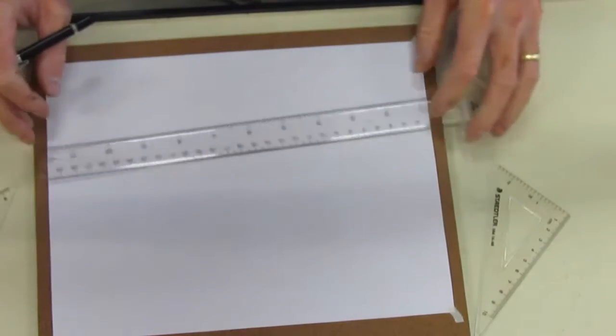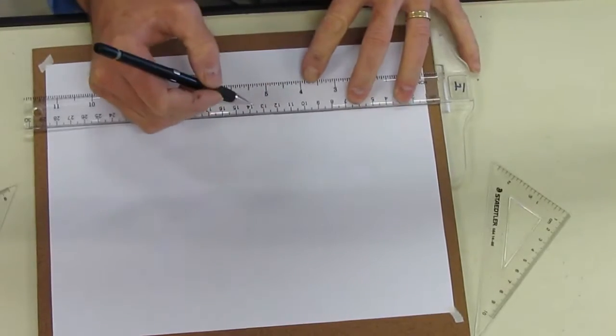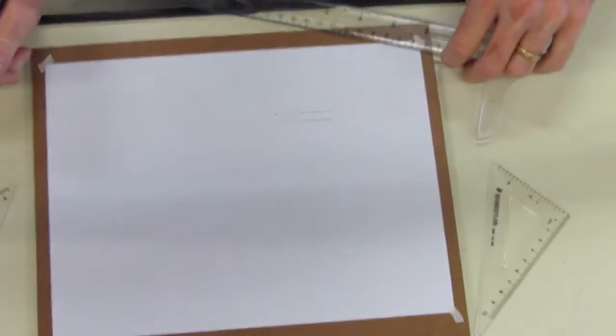Now we know with our t-square that I can make horizontal lines, and all I have to do is move my t-square up, make another line, it is horizontal.